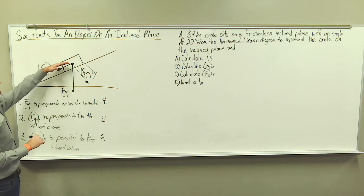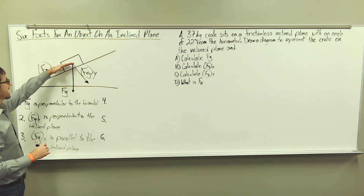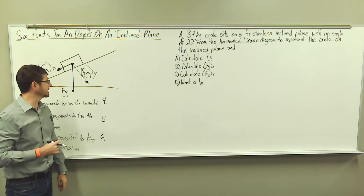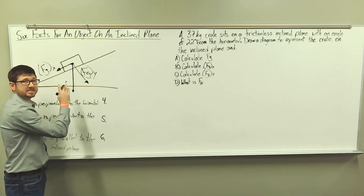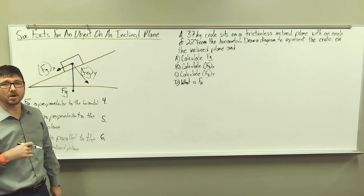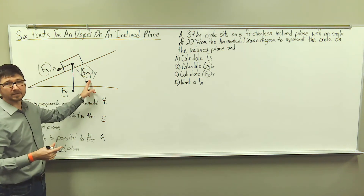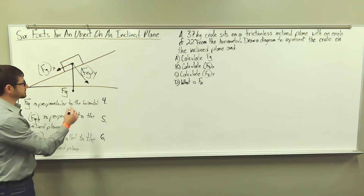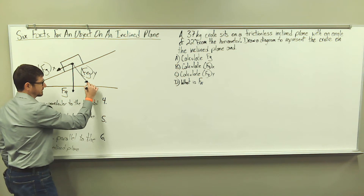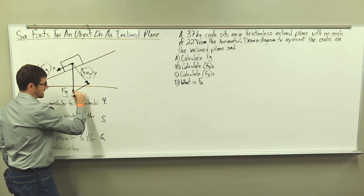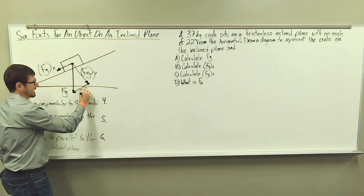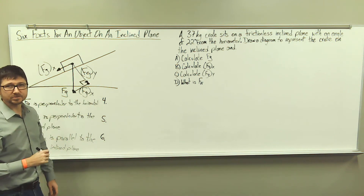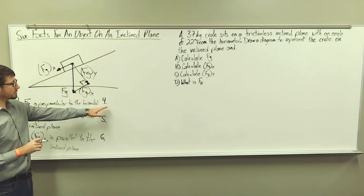What we can do is project this X component of the weight force down using the head-to-tail method. We're going to place the tail of the X component of the weight force on the head of the Y component of the weight force, and project it down using the head-to-tail method. We'll label this vector F sub G sub X, and this gives us a right triangle.